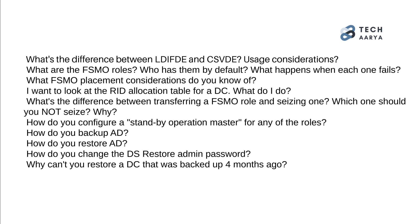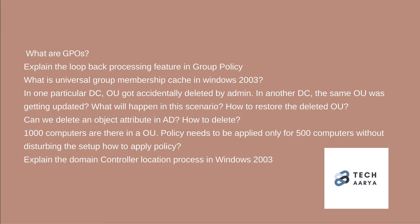108. How do you restore AD? 109. How do you change the DS restore admin password? 110. Why can't you restore a DC that was backed up 4 months ago? 111. What are GPOs? 112. Explain the loopback processing feature in Group Policy. 113. What is universal group membership cache in Windows 2003? 114. In one DC, an OU got accidentally deleted by an admin. In another DC, the same OU was getting updated. What will happen in this scenario? How do you restore the deleted OU?